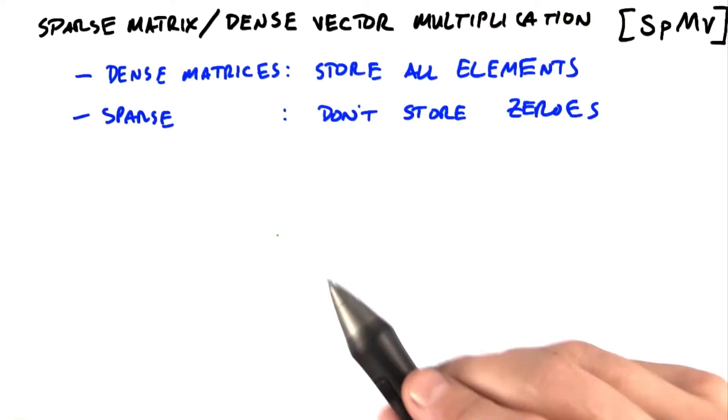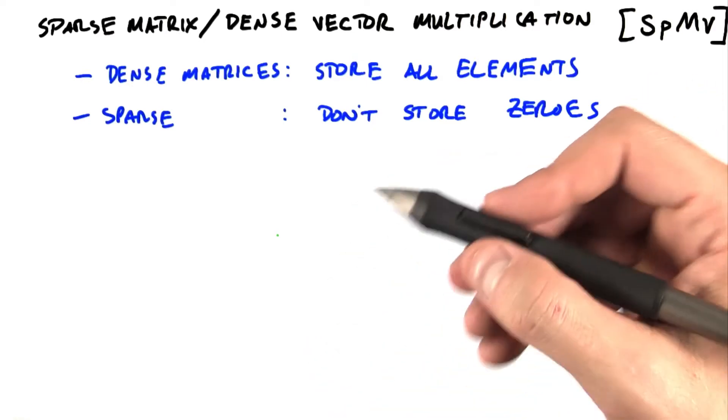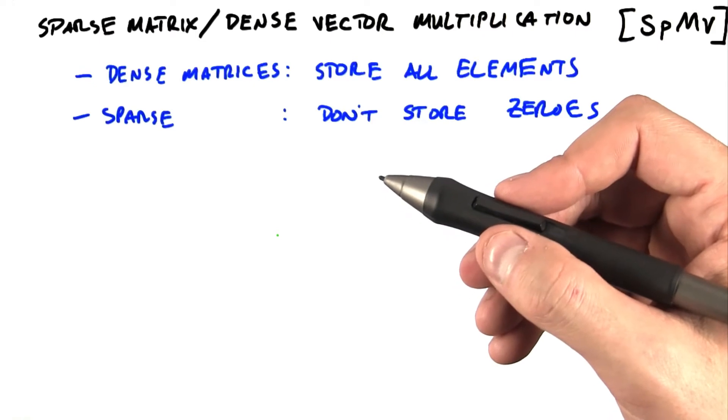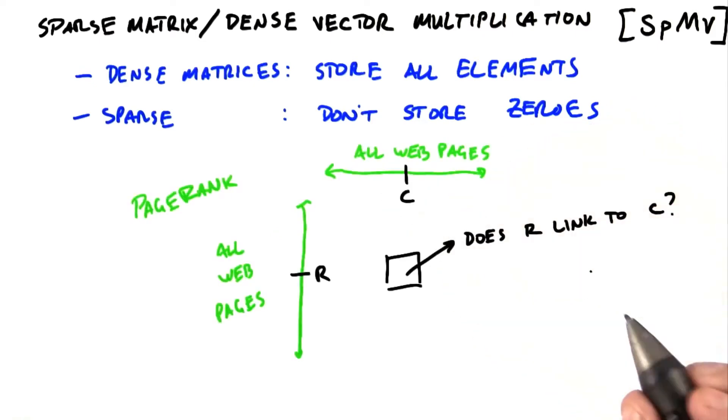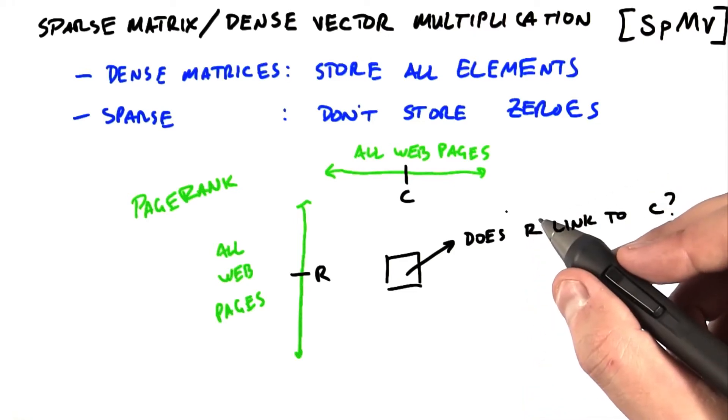So sparse matrices are incredibly common in computational problems in many domains. For instance, PageRank is the world's largest matrix computation.